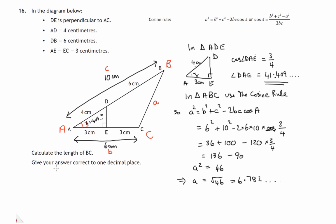It asks us to give an answer correct to one decimal place. So BC is approximately 6.8 centimeters as a measurement, and that's to one decimal place.